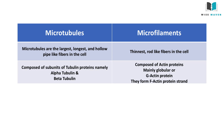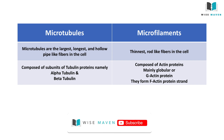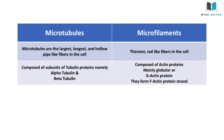Microtubules are composed of subunits of tubulin proteins, namely alpha tubulin and beta tubulin. Microfilaments are composed of actin proteins, mainly globular or G-actin protein. They form a fibrous protein strand called F-actin strand.